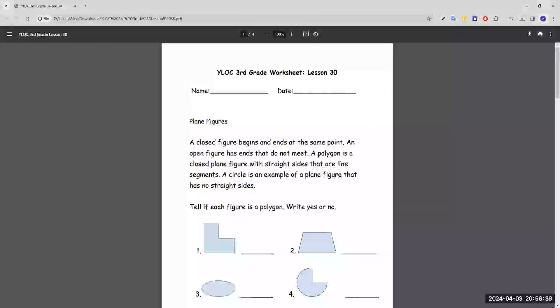So today we're going to be doing 3rd grade worksheet lesson 30, and the first exercise is to tell if each figure is a polygon. This paragraph here sums up what a polygon even is. A polygon is a closed plane figure with straight sides or line segments.